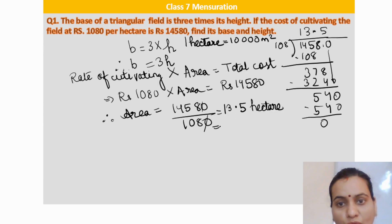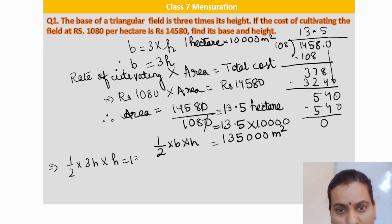So we will multiply 13.5 hectare with 10,000. The decimal point will jump, so it will be 135,000 meters square area. Now we can use the formula for the area. Half into base into height. Base is equal to 3h, so half into 3H into H is equal to 135,000.